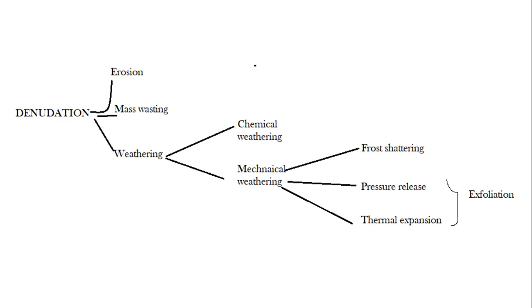Now today we just want to focus on a particular type of mechanical weathering. Some of the mechanical weathering processes include frost shattering, pressure release, and thermal expansion. Thermal expansion is also called insolation weathering.